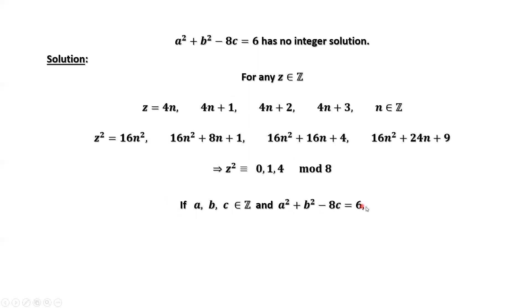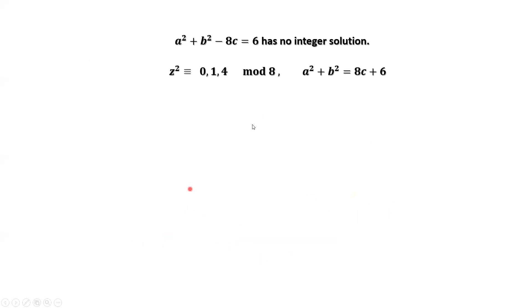If this equation has an integer solution, for example, if a, b, and c are solutions for this given equation, we want to find a contradiction. Simplify this given equation. We move negative 8c to the right-hand side. We have a squared plus b squared equals 8 times c plus 6. Let's consider the left-hand side: a squared plus b squared.